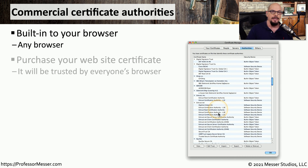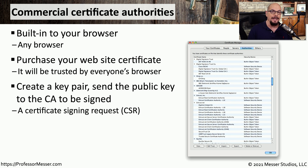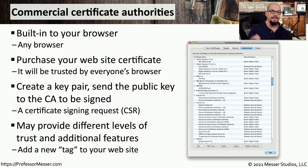These commercial certificate authorities allow us to purchase a certificate from them that is then trusted by all of these browsers or all of these operating systems. This is usually done by building a key pair locally on your machine. You would then provide the public key to the certificate authority. The certificate authority would go through a number of steps to confirm that you are indeed the person making the request, and then they will sign that particular certificate. When you're providing that public key to the certificate authority, we refer to that as a certificate signing request or a CSR. Once the certificate authority signs that certificate, they send it back to you, and now you can put that certificate on your server.